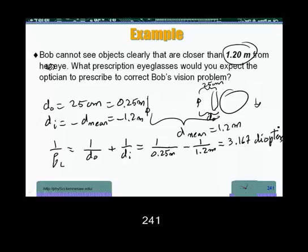Diopters, or the focal length of the lens is 1 over 3.167 diopters, which is 0.32 meters, and it is a positive focal length because our lens needs to be converging.